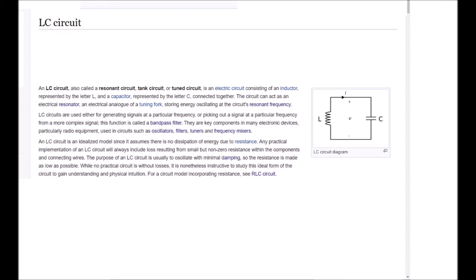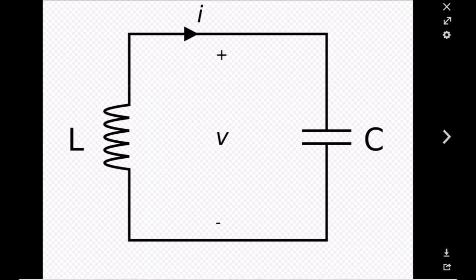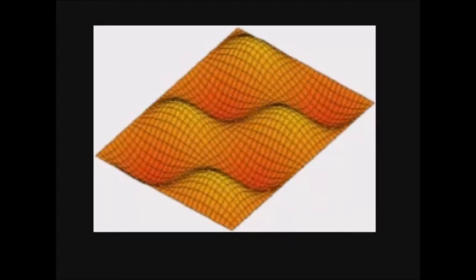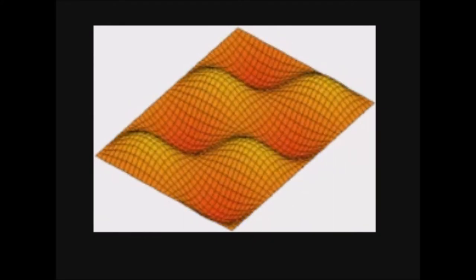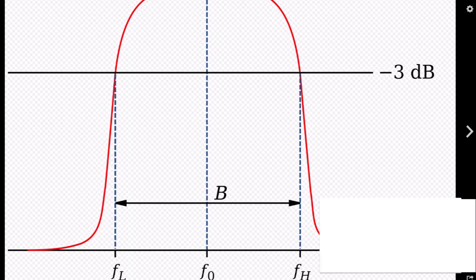L-C-Circuit. An L-C-Circuit, also called a resonant circuit, tank circuit, or tuned circuit, is an electric circuit consisting of an inductor represented by the letter L and a capacitor represented by the letter C, connected together. The circuit can act as an electrical resonator, an electrical analog of a tuning fork, storing energy oscillating at the circuit's resonant frequency. L-C circuits are used either for generating signals at a particular frequency or picking out a signal at a particular frequency from a more complex signal. This function is called a bandpass filter.